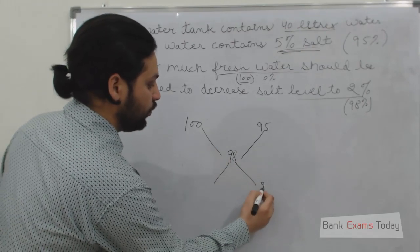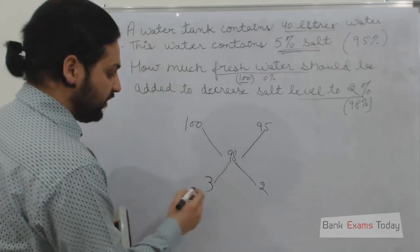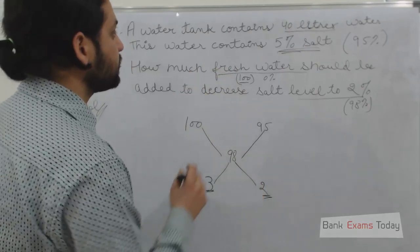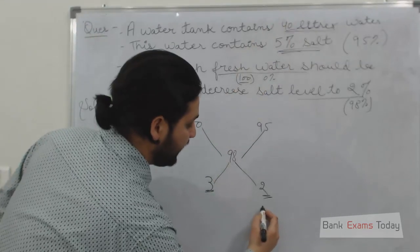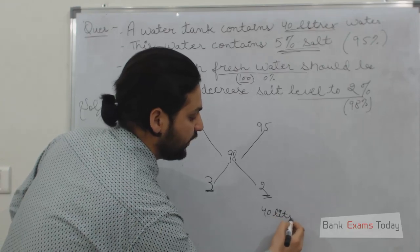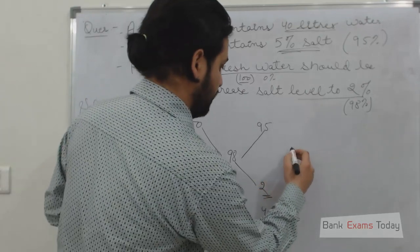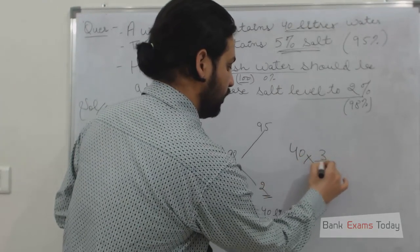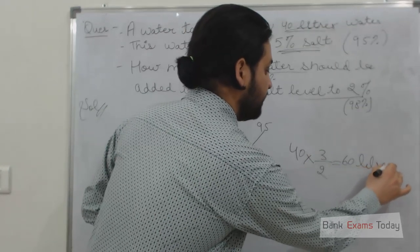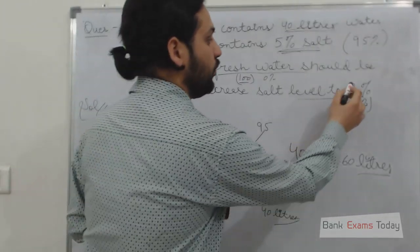The ratio would be 3 to 2 — there should be 3 parts of fresh water and 2 parts of 5% salty water. The water tank already has 40 litres of salty water, so how much fresh water do we need? Simply apply the ratio: 40 multiplied by 3 over 2 equals 60 litres. We need to add 60 litres of fresh water to reduce the saltiness of the water to 2%.